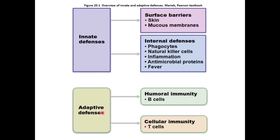The innate defenses include surface barriers such as skin and mucous membranes, and internal defenses like phagocytes — think macrophages — NK cells or natural killer cells, the components of inflammation, antimicrobial proteins (AMPs), and fever. The adaptive defenses involve humoral immunity with B cells and cellular immunity with T cells, plus the memory components of each.